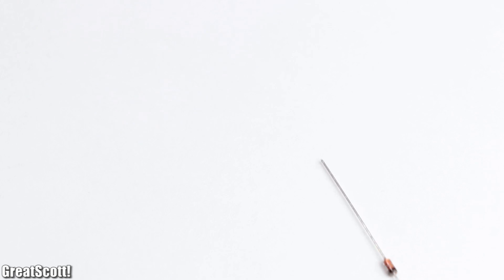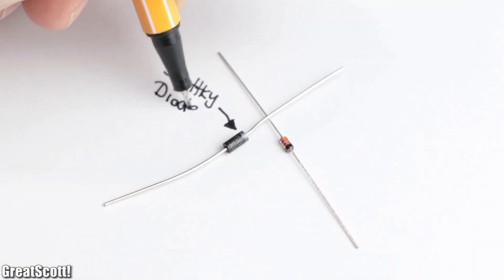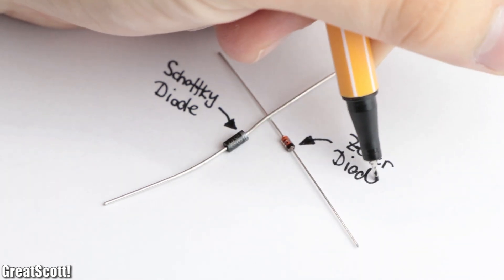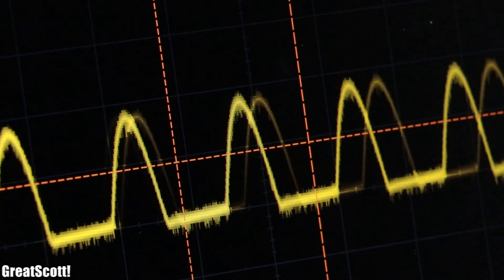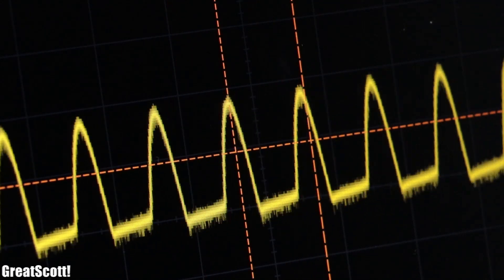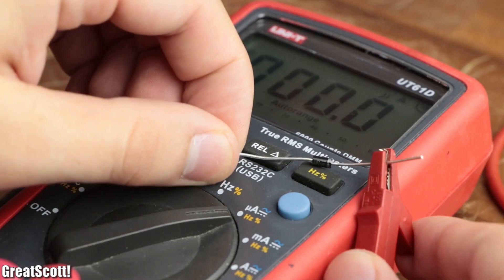The thing is though that there are two more diode types which are pretty popular: the so-called Schottky diode and the so-called Zener diode. So in this video, let's find out how those two diode types are different and when it makes sense to utilize them in a circuit. Let's get started.